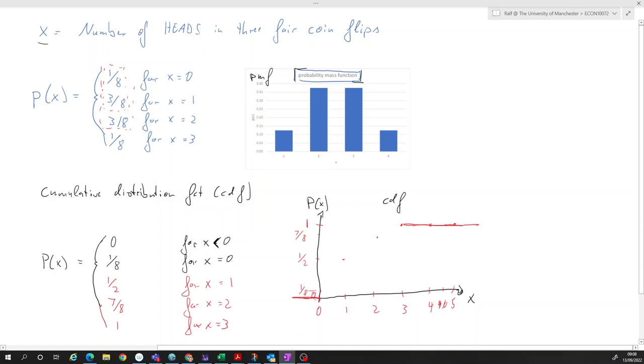So we already established a number of things: that cumulative distribution function starts with a zero to the left of all the outcomes, and it ends with a one from the last possible outcome onwards. But what in between? So we know a couple of three points here: we know this point, we know this point, and we know this point. What, for instance, about the probability that x is smaller or equal to 1.5?